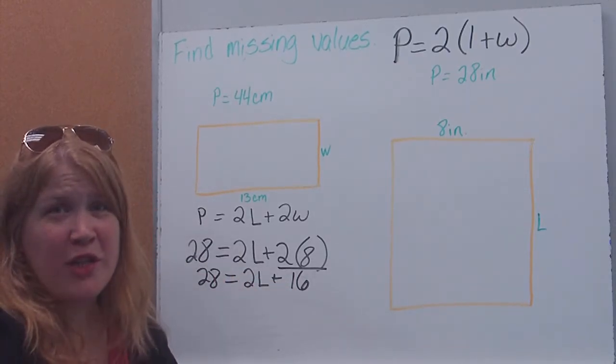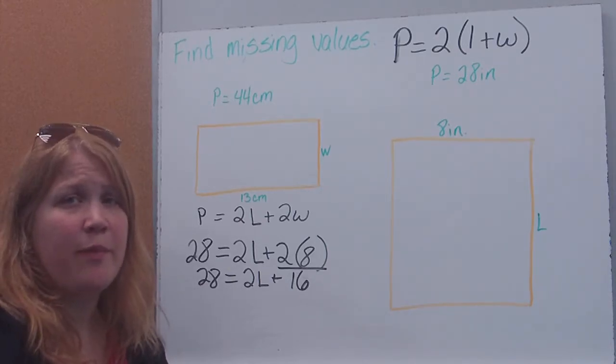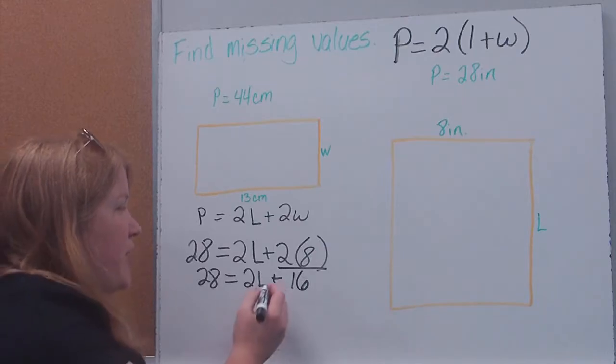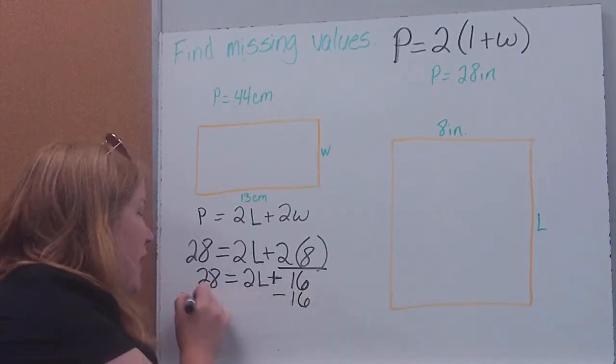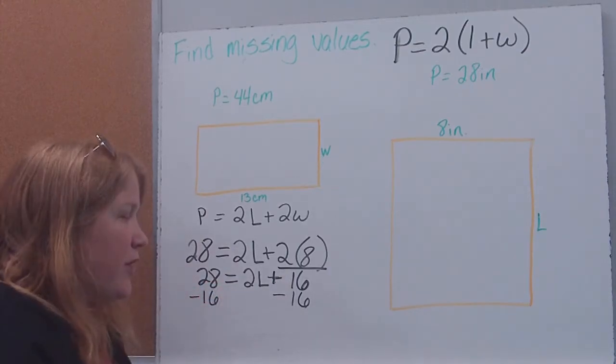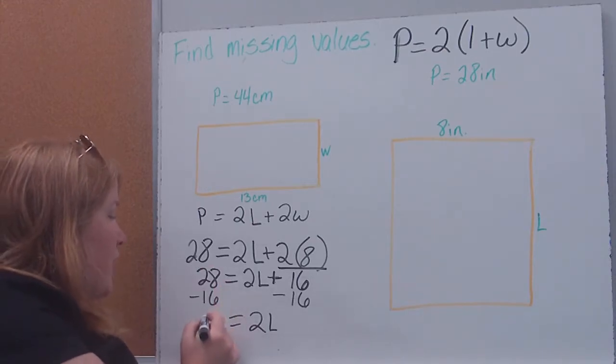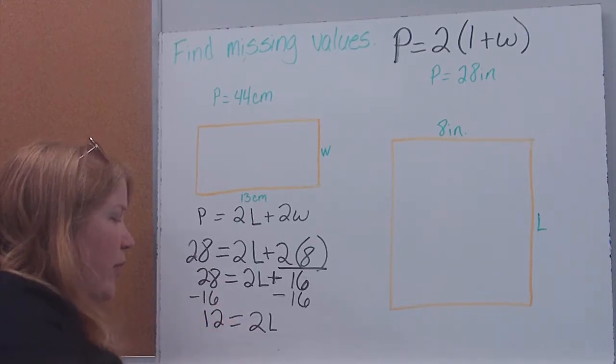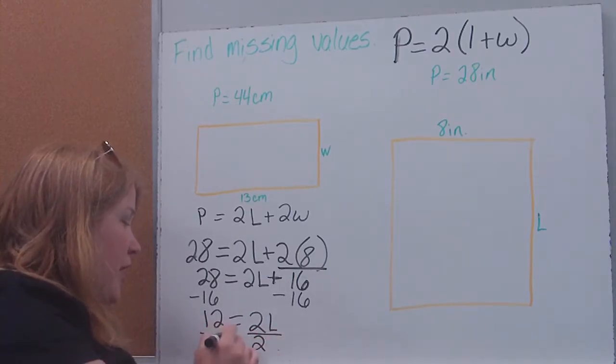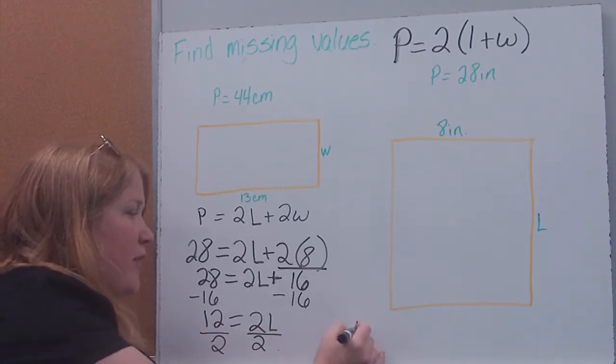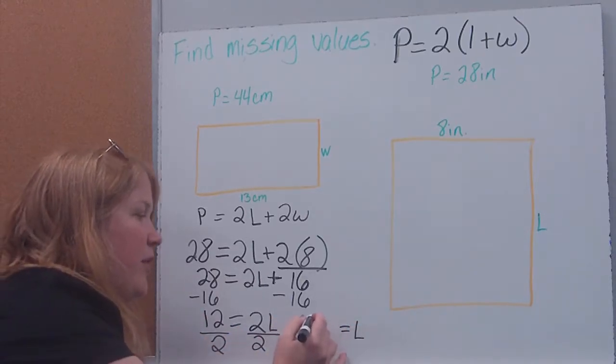So again, remember, now we're undoing operations to solve our equations, so we need to undo them in our inverse order of operations. So the first thing I want to undo is my addition. And I'm going to use the inverse operation, meaning I'm going to subtract 16 from both sides. Over here, I'm just left with 2 times L. 28 minus 16 leaves me with 12. Now, how am I going to undo my multiplication? I'm going to divide. So I'm left with L on this side. 12 divided by 2 gives me 6.